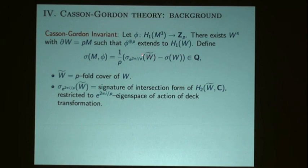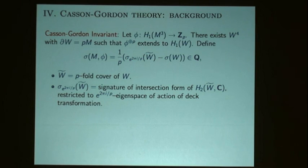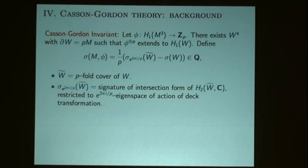W-tilde is the P-fold cover of W. Since you have a map of W to ZP, you get a P-fold covering space, and you want the signature of that covering space restricted to an eigenspace of the ZP action. The homology of the P-fold cover splits into eigenspaces. You compute one eigenspace signature, subtract the signature of W, divide by P, and end up in Q. That was the first Casson-Gordon invariant defined.